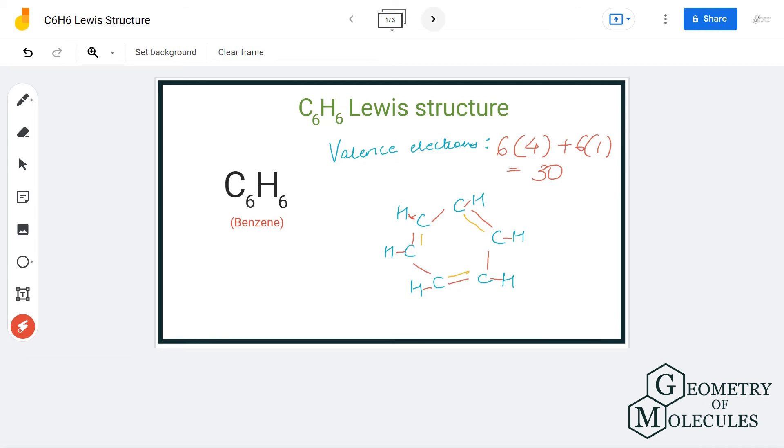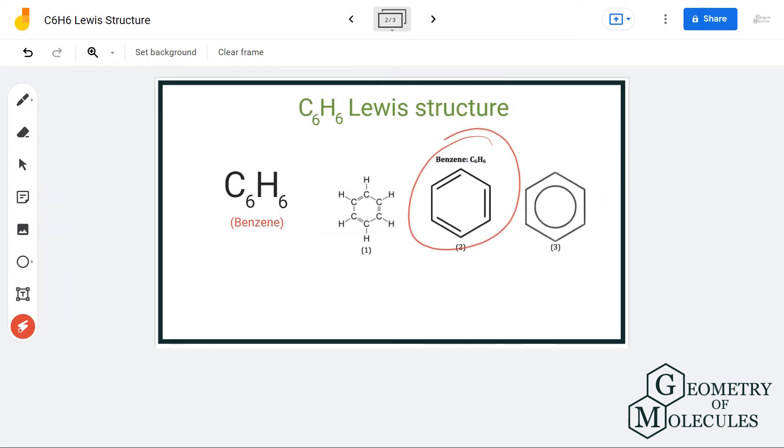There are many resonance structures for this molecule. Some of them are these. You can also show this molecule by drawing a ring inside this hexagon. This is known as the benzene ring, and this is another way to show the molecule.